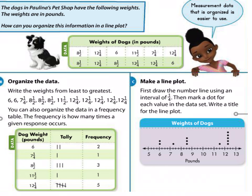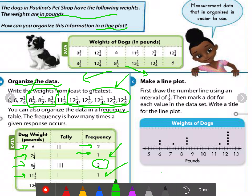Now in the second step we start making the line plot. Because we have quarters, we draw a number line, but we have to be careful to include the least and the greatest values. The least value was 6 and the greatest value was 12 and one-quarter, so I start the line plot at 5 and finish it at 13.